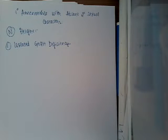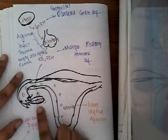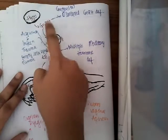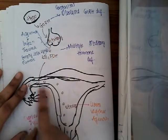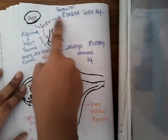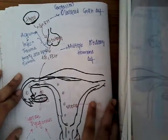Hello friends, let us continue our lecture on primary amenorrhea. In our last class we learned about primary amenorrhea with normal secondary sexual characters. Here we are going to learn about primary amenorrhea with absent secondary sexual characters. Whenever the secondary sexual characters are absent, it indicates there is some problem in the hypothalamo-pituitary ovarian axis or in the ovary, which can lead to absent secondary sexual characters.